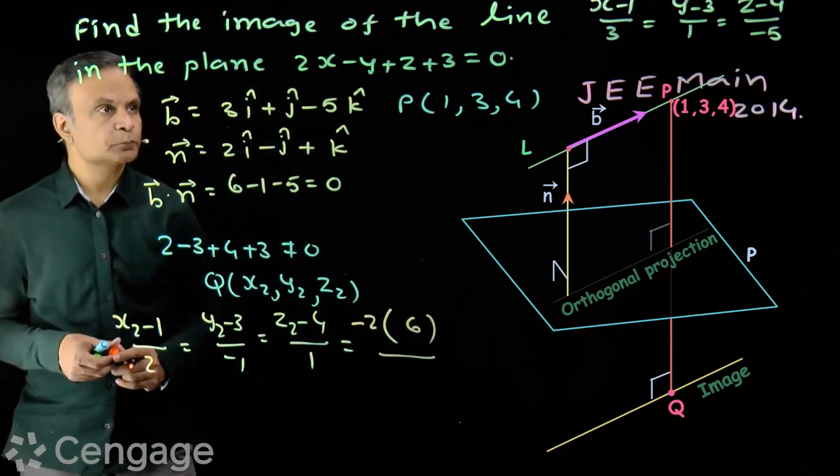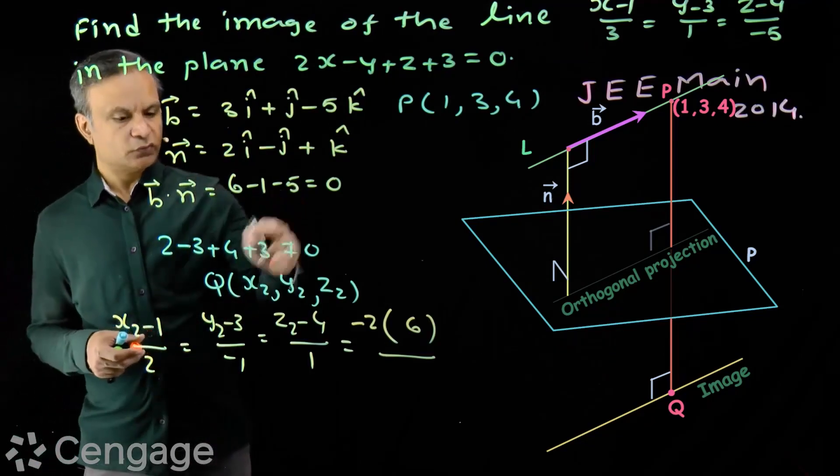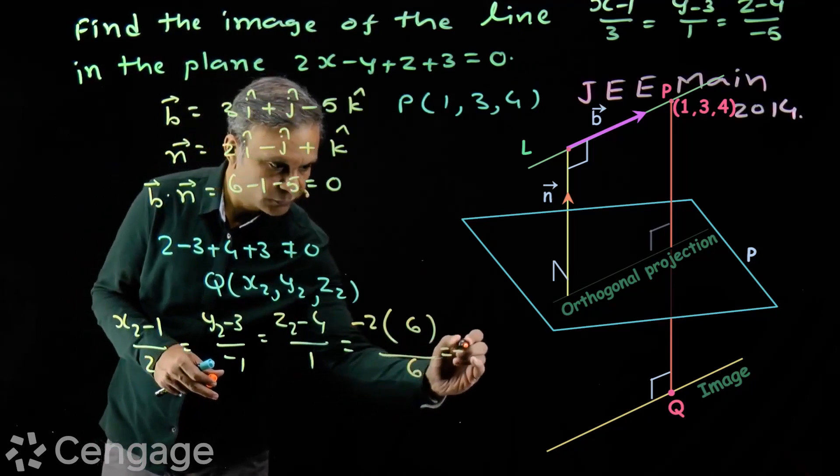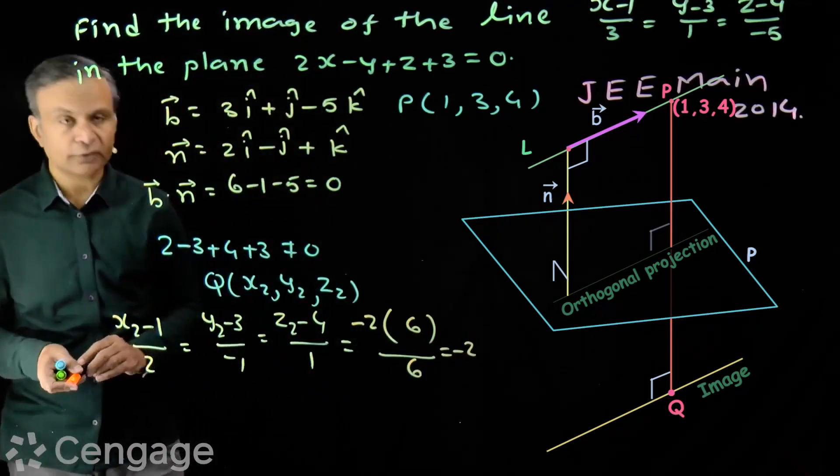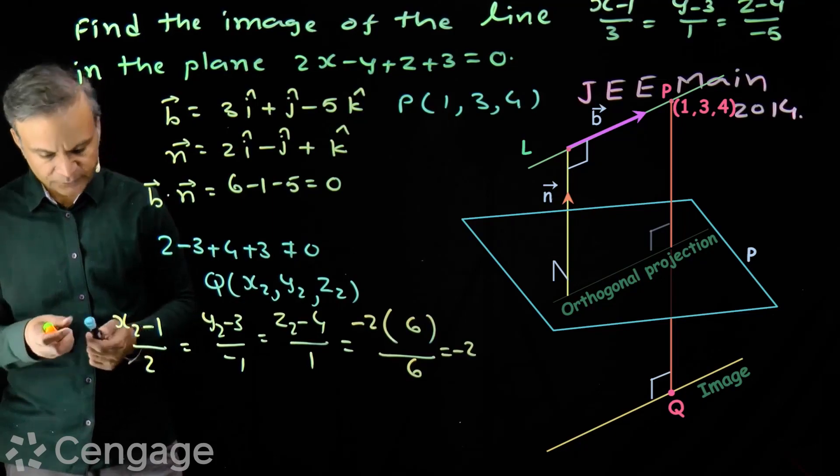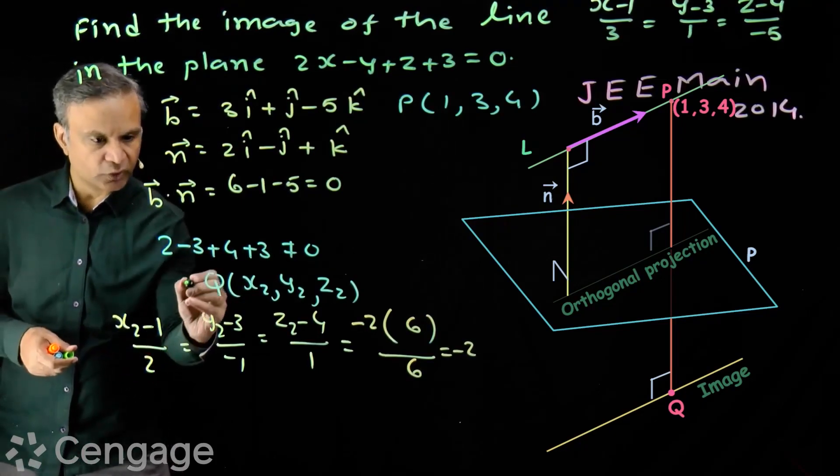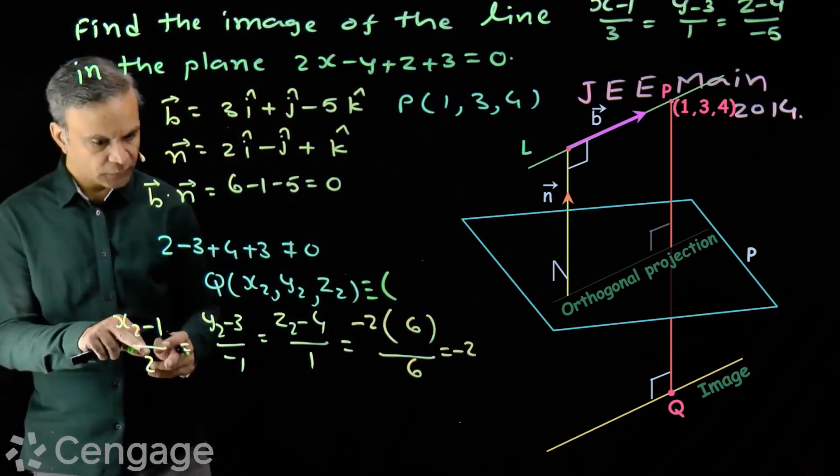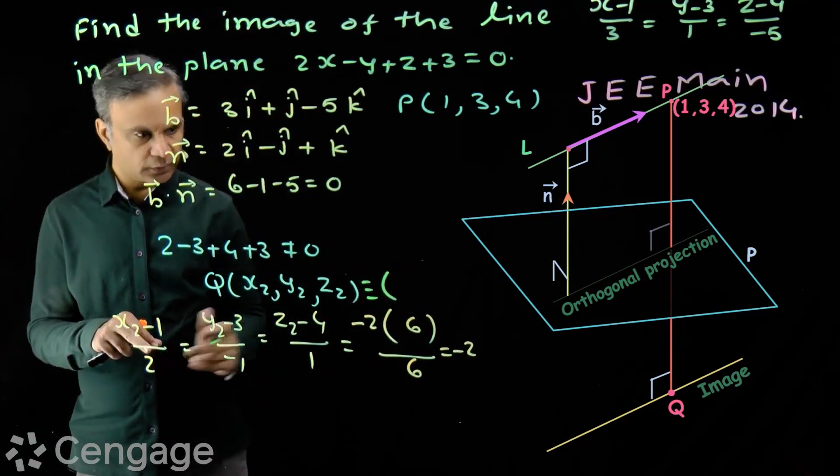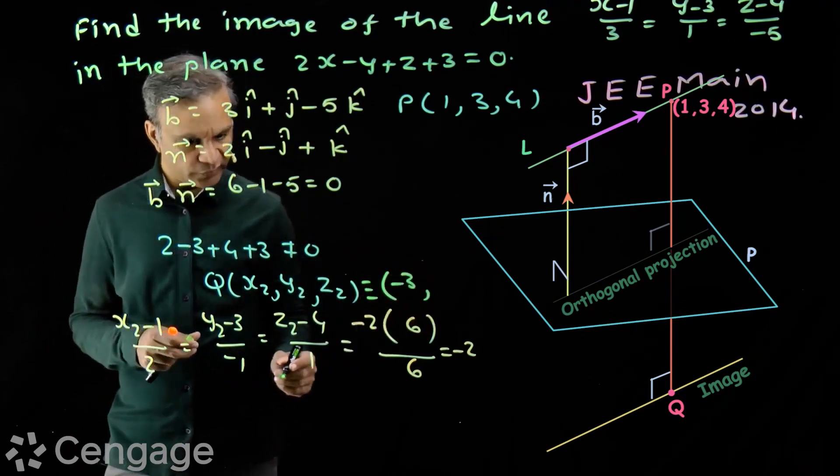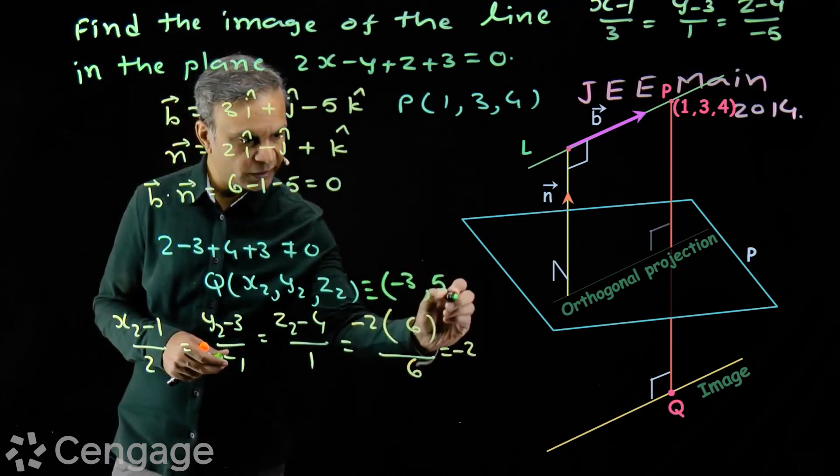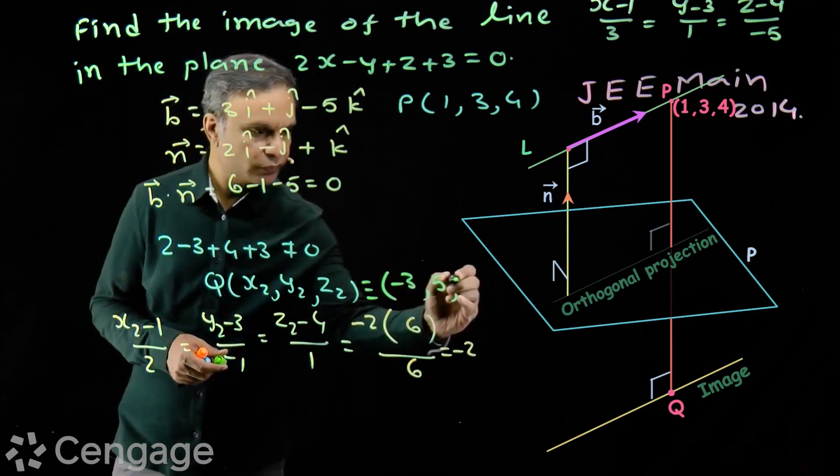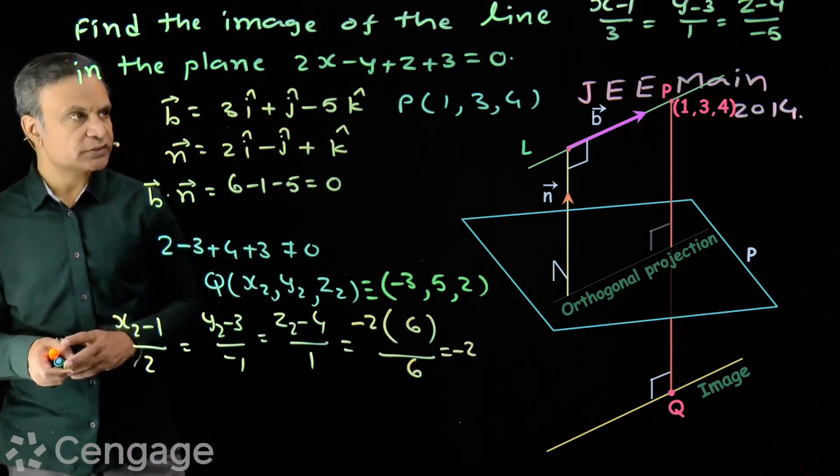6 over a square plus b square plus c square. So, this value is 6. This is equal to minus 2. We have one good integral value. So, coordinates of point q will be x2 will be minus 3. Y2 will be 5 and z2 will be 2. So, we have coordinates of image.